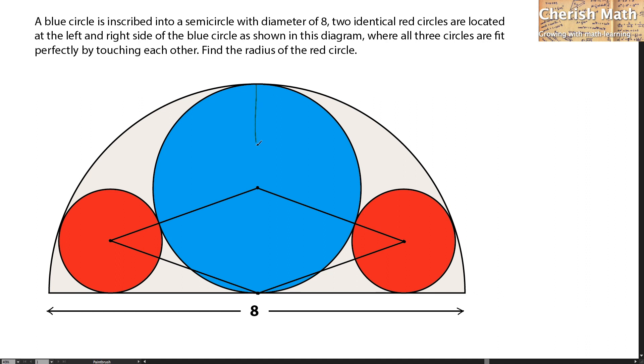If I connect a line from the top to the bottom of the blue circle, this is exactly the diameter of the blue circle, and the value of the diameter is by taking one half of the eight units of this semicircle.